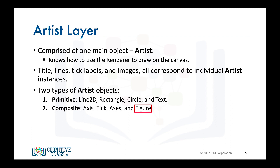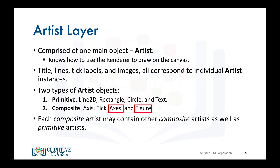The most important composite artist is the axes, because it is where most of the Matplotlib API plotting methods are defined, including methods to create and manipulate the ticks, the axis lines, the grid, or the plot background. It is important to note that each composite artist may contain other composite artists as well as primitive artists. So a figure artist, for example, would contain an axis artist as well as rectangle or text artists.